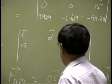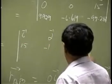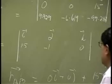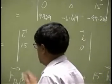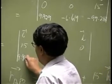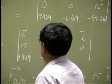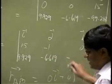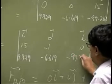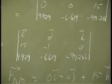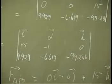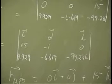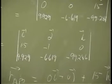1.5, negative 1, and a 0. That's from here. Then the force again, you get 9.929, 6.619, negative 99.286. So that's just a simple cross product between vectors r and vectors f.